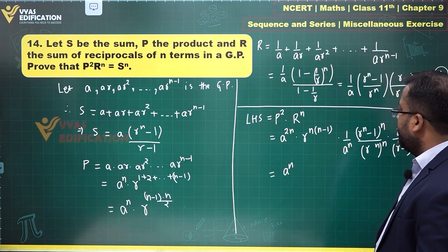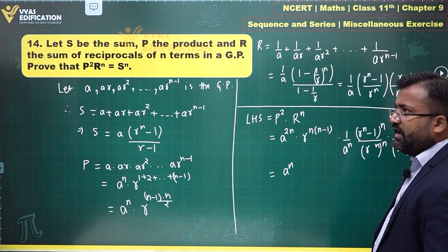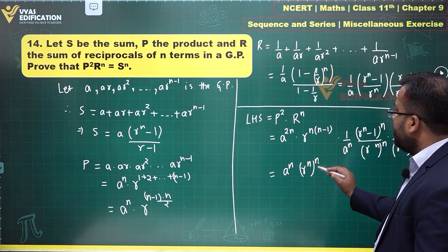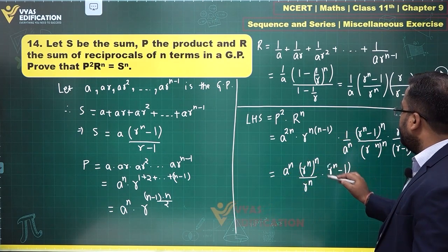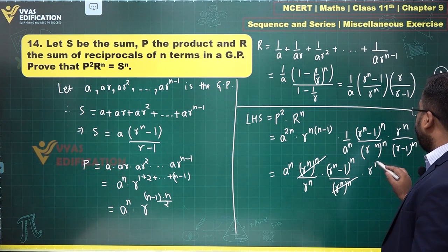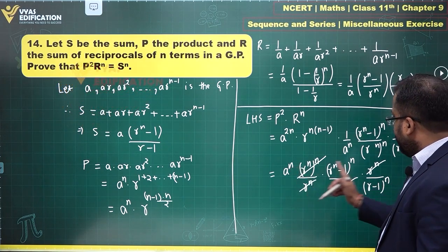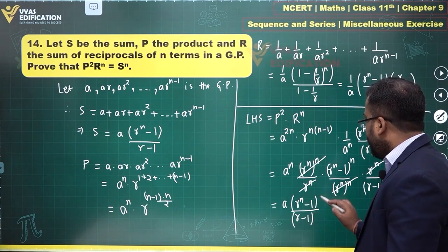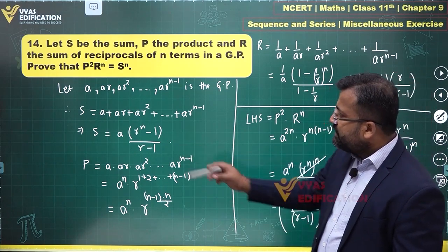a^(2n) · aⁿ cancels to give aⁿ. The r powers: r^(n(n-1)) · r^(n²-n) simplify, and after cancellation what remains is [a · (rⁿ - 1)/(r - 1)]ⁿ, which is exactly Sⁿ. So LHS = Sⁿ = RHS.